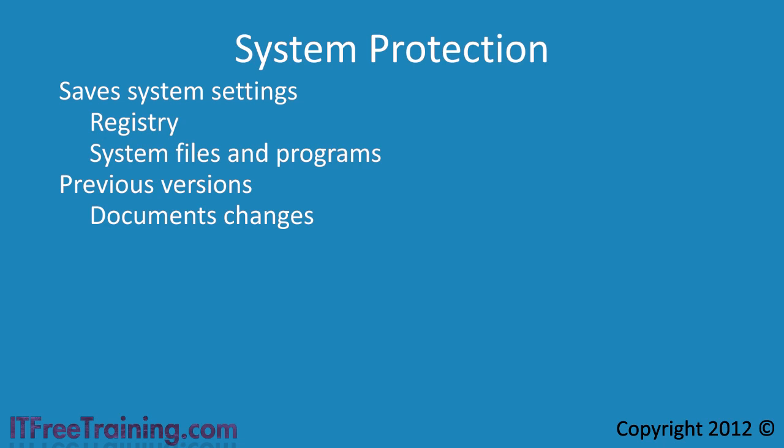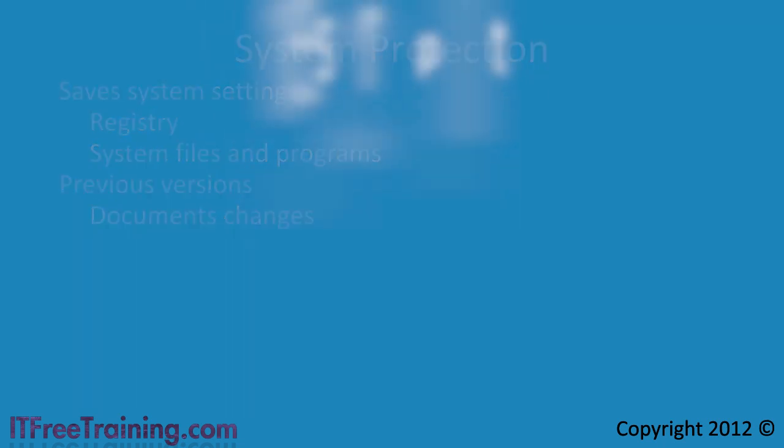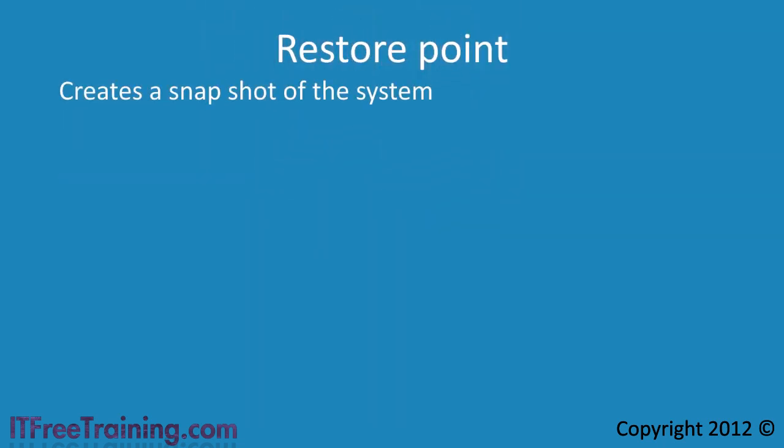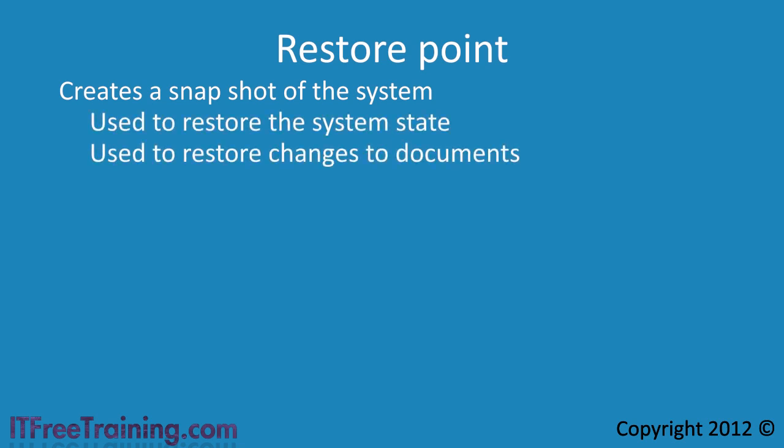System protection works by creating a snapshot of the system called a restore point. The restore point can be used to restore the system state or document changes. For example, you could restore the system to a time before you installed a particular piece of software or driver, or restore a file you accidentally deleted. System protection does not replace the need for regular backups as it only keeps a copy of changes in a cache. Once the cache is full, the oldest entry is removed to make room for new changes.